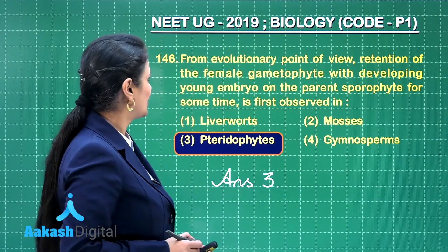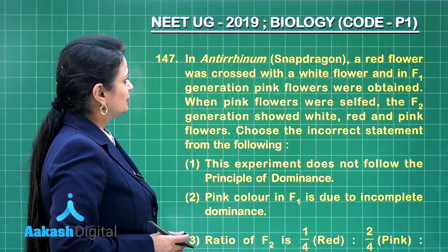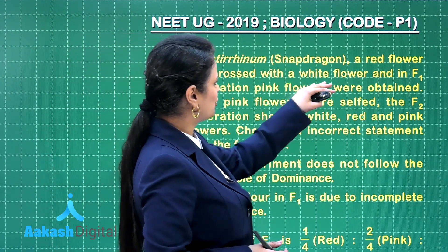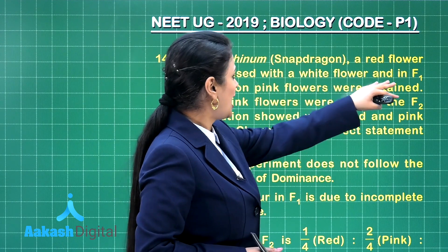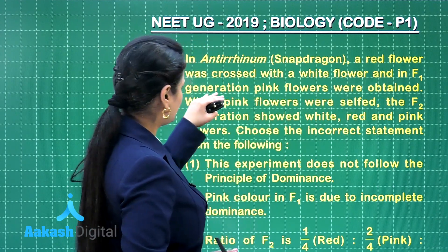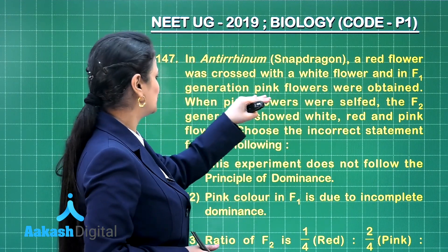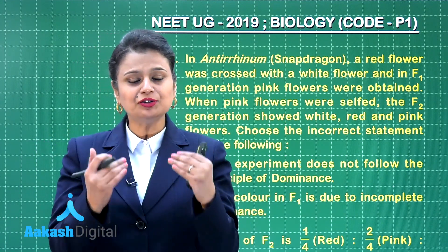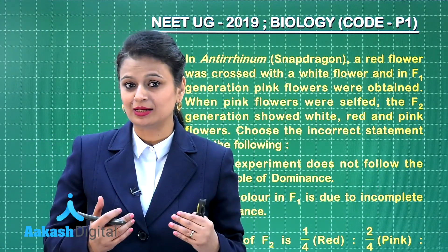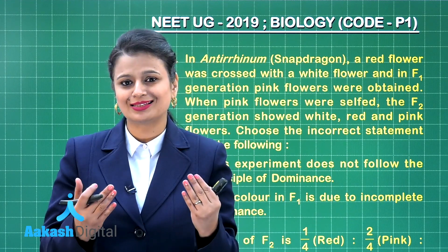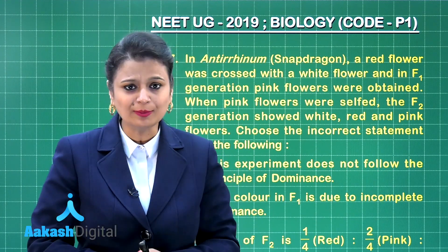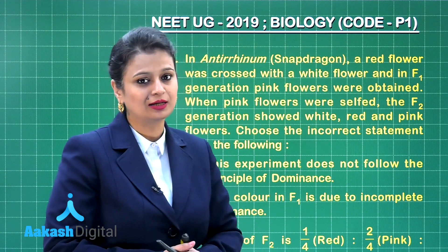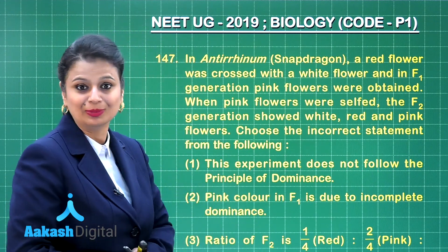Moving to the next one. In Antirhinum (snapdragon), a red flower was crossed with a white flower and in the F1 generation, pink flowers were obtained. When the F1 generation is intermediate between the two parents, this is called incomplete dominance. In Antirhinum, flower color is a classic example of incomplete dominance.